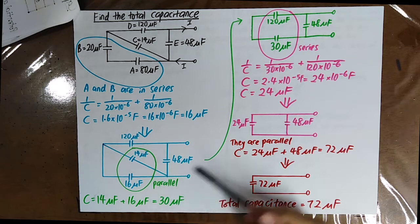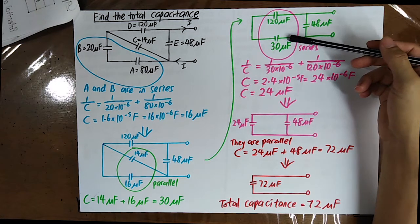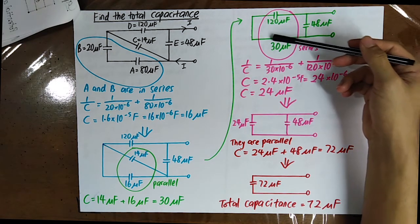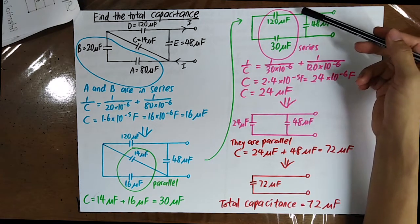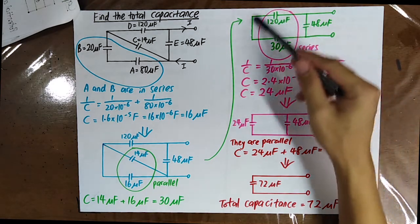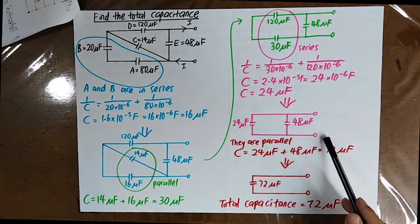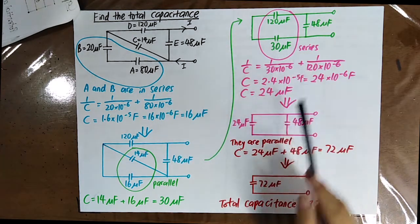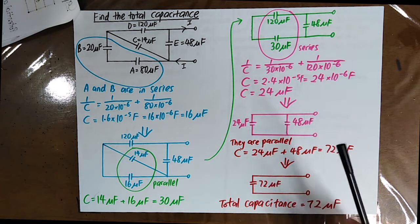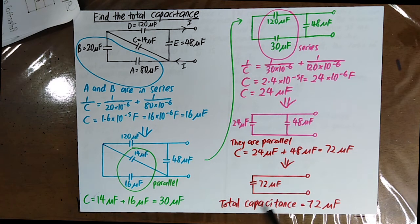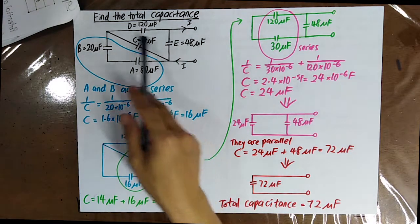You simplify this diagram further. Now, if you want to walk through the 30 µF capacitor, you have no choice but to walk through the 120 µF capacitor as well. Since you do not have freedom to choose, they are connected in series, and you find their equivalent capacitance. You finally simplify the diagram to the last stage where the remaining capacitors are in parallel, so you use the parallel formula to find the total capacitance. The key part is that you simplify them one by one.